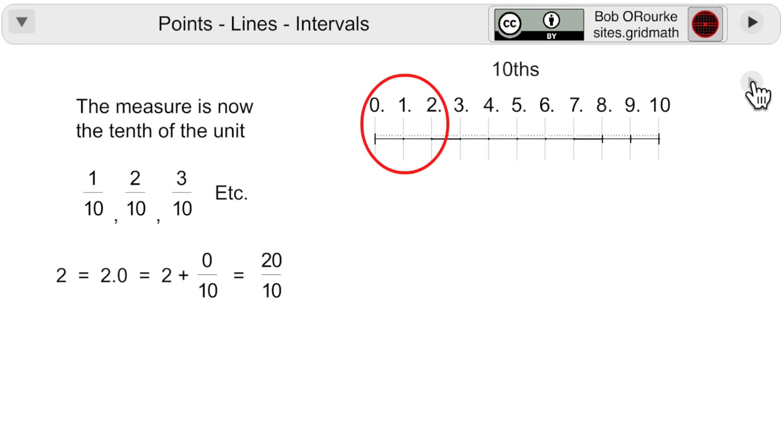The way I'm looking at it, the measure now is actually the tenth of a unit. One tenth, two tenths, etc. And the units take on a different form. Two becomes 2.0 which means 2 plus 0 tenths or 20 tenths.